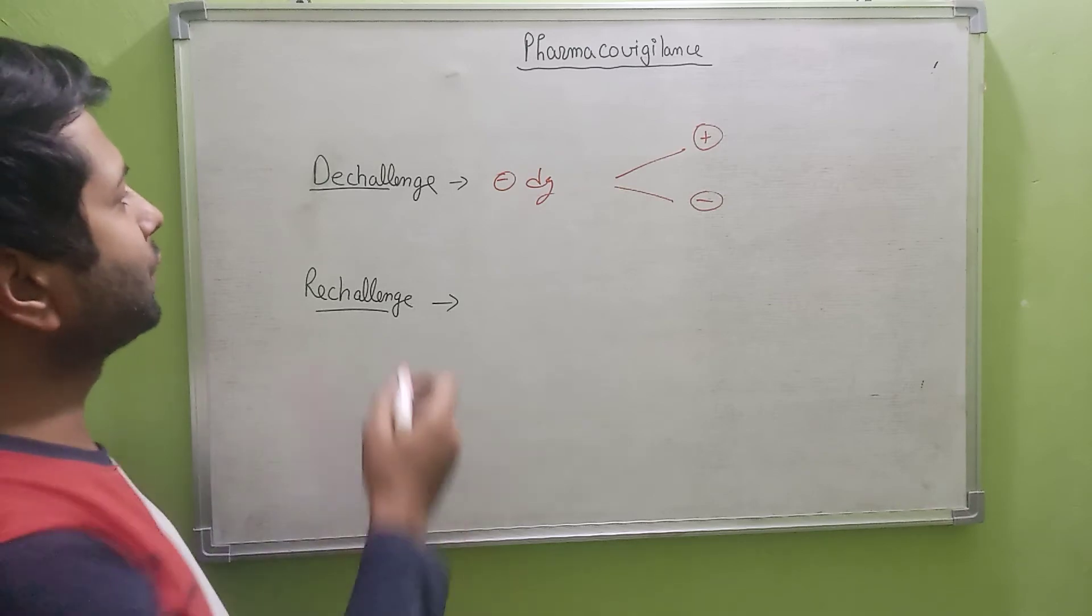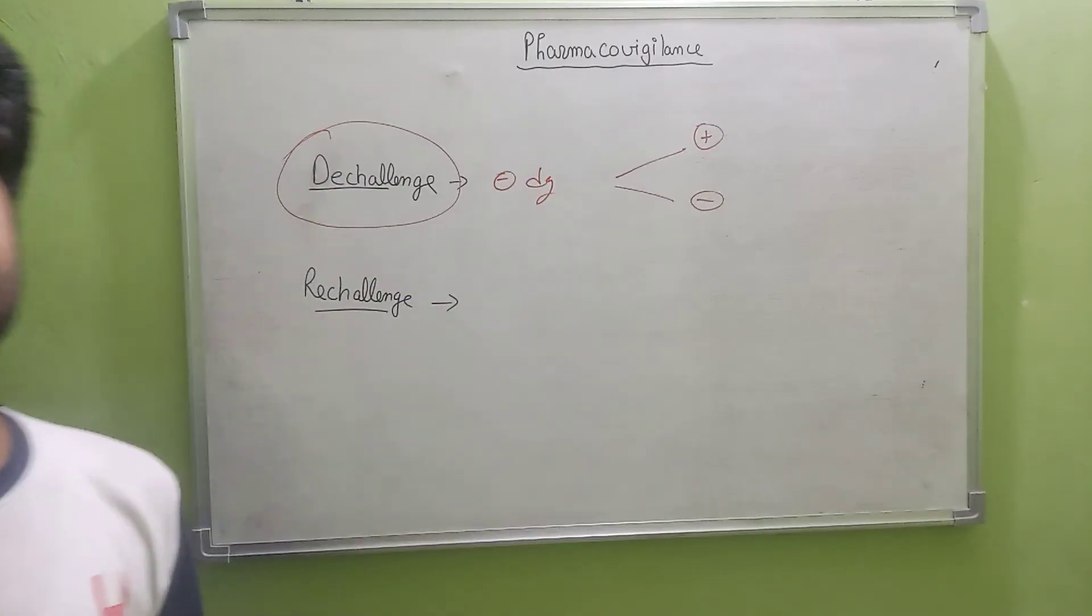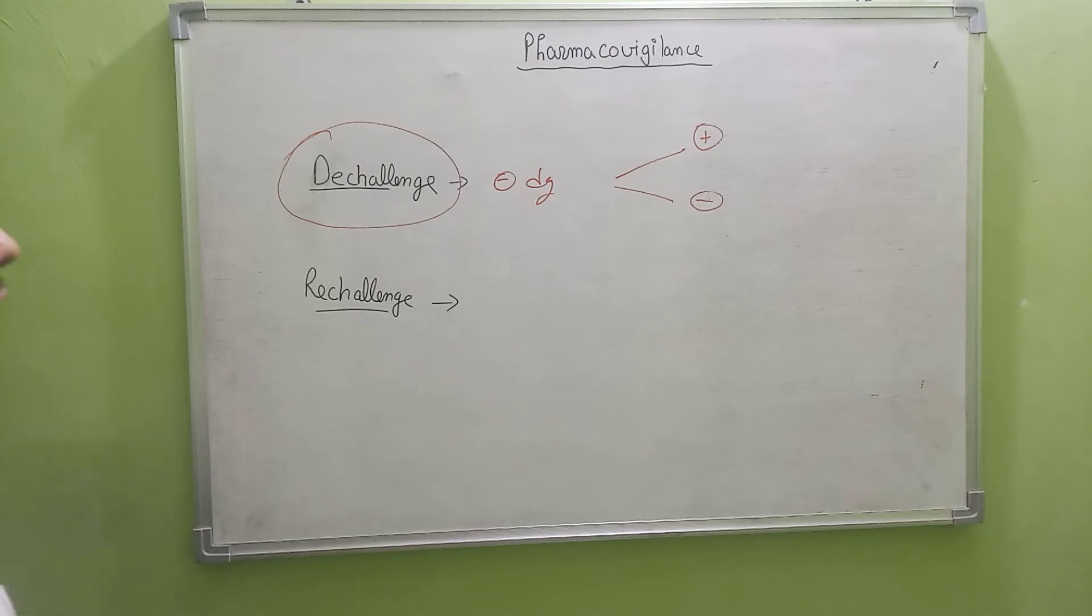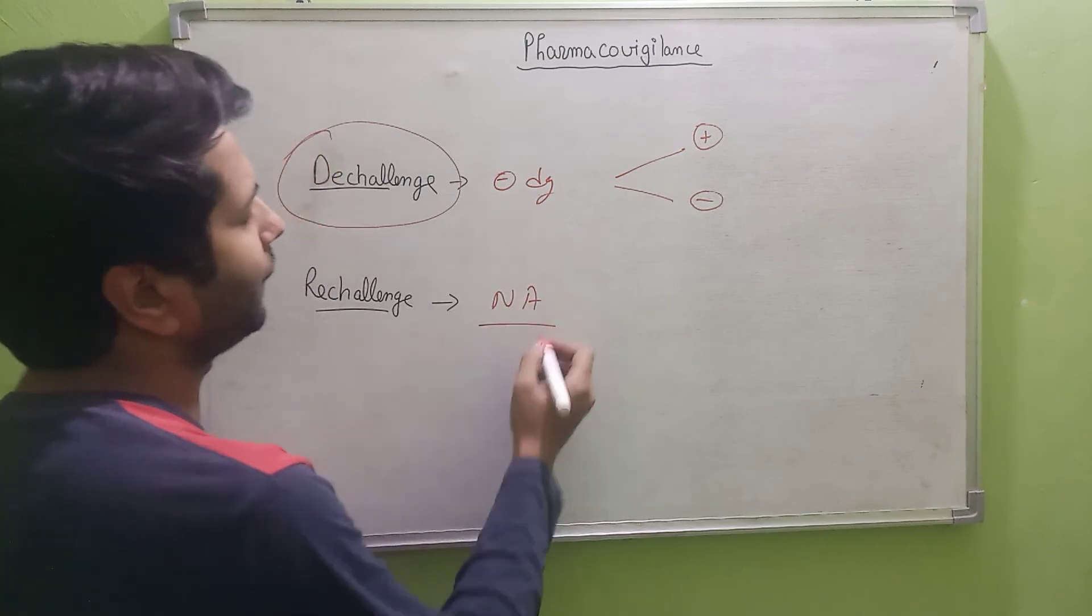Suppose our de-challenge is unknown. The result of our de-challenge is unknown. Always remember that our re-challenge is not applicable in that scenario.